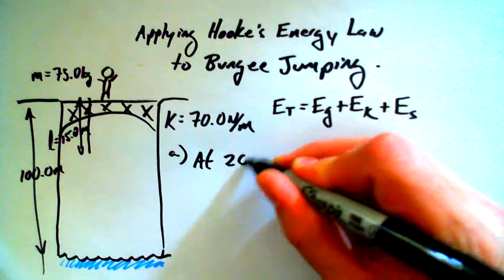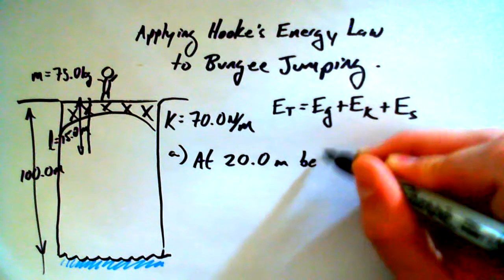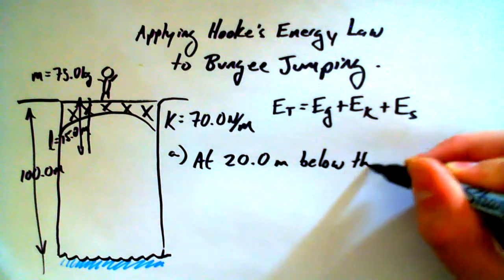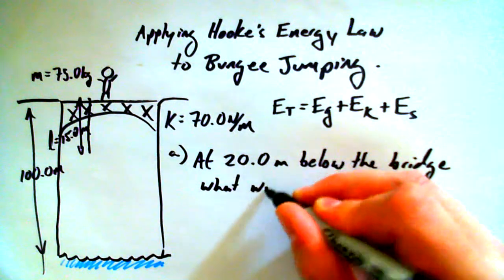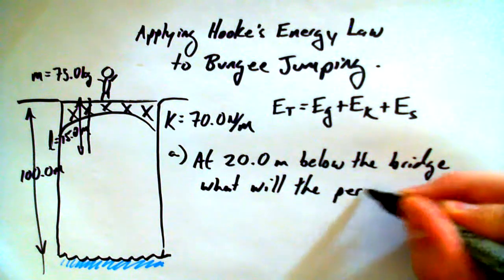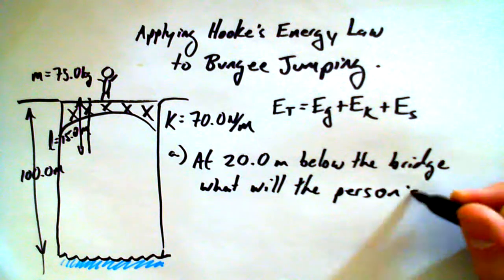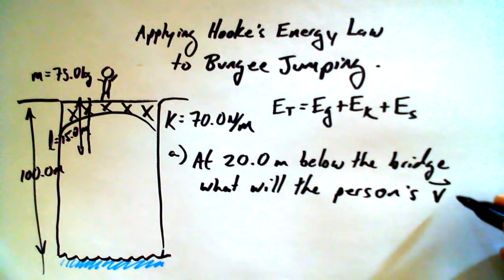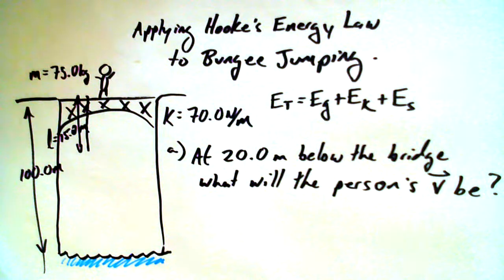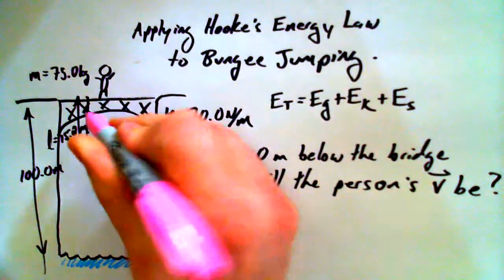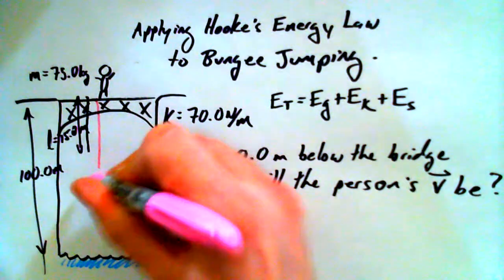And I want to ask a question. A position 20 meters below the bridge. What's the person's velocity going to be? Okay, so let's take stock of what we know here. And I'll do it in another color.